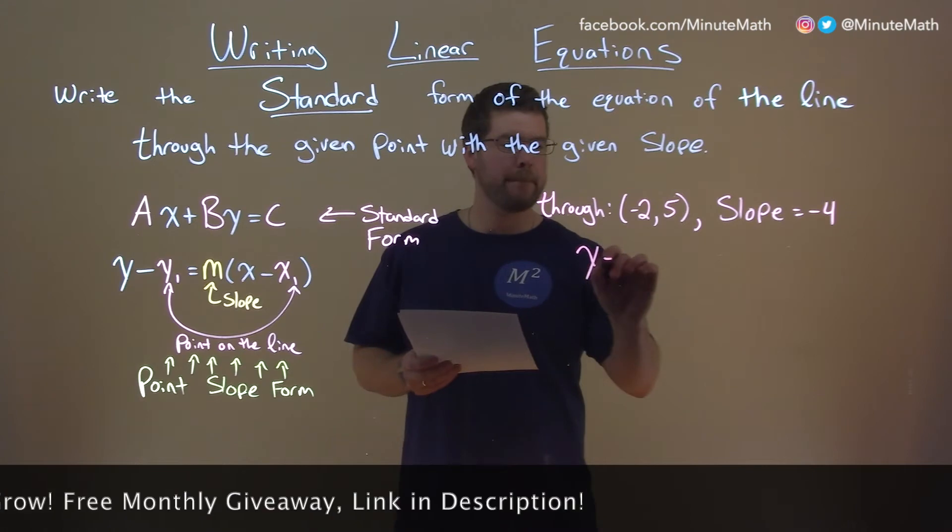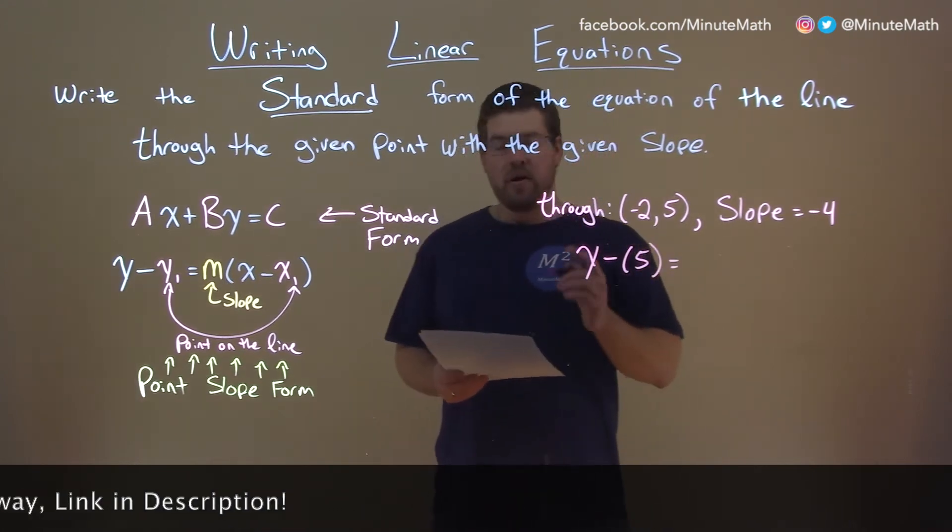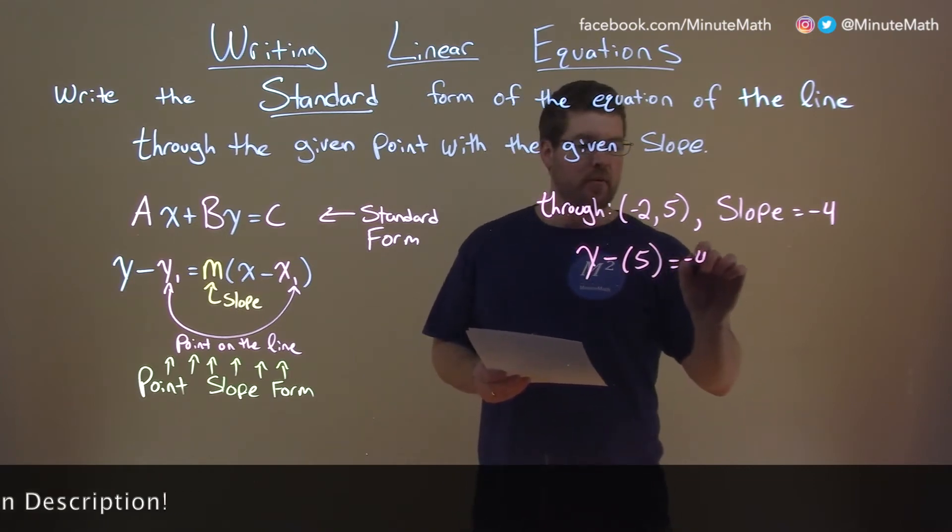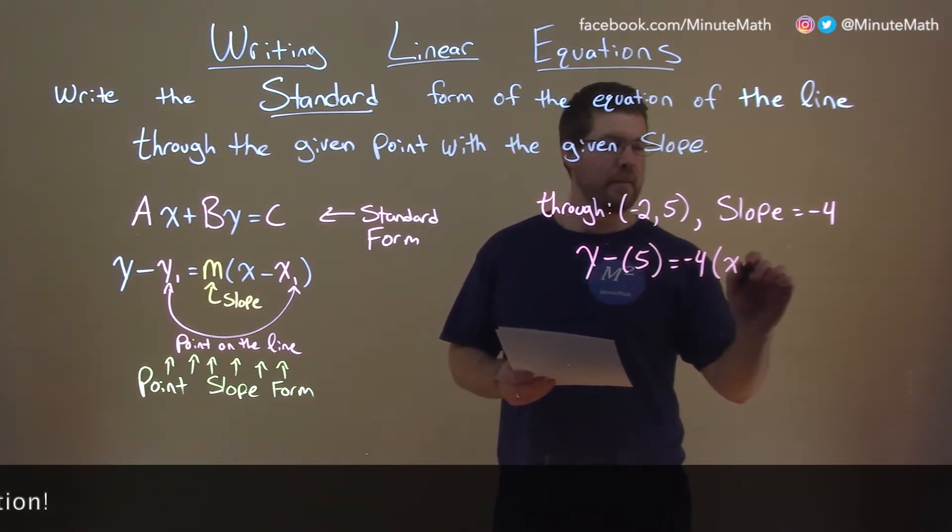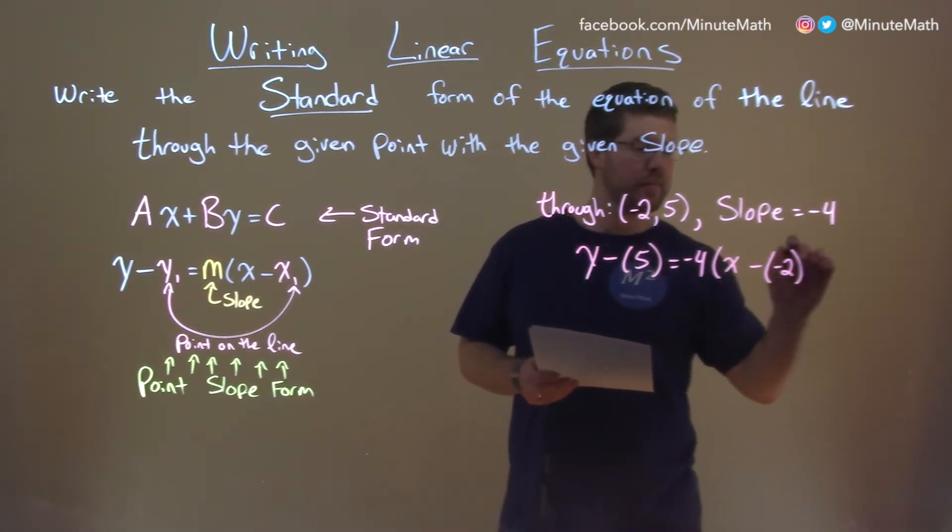We have y minus our y1, which is 5, is equal to our m, our slope value, negative 4, times x minus our x1 value, which is a negative 2.